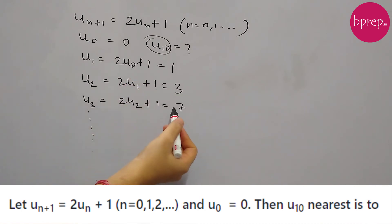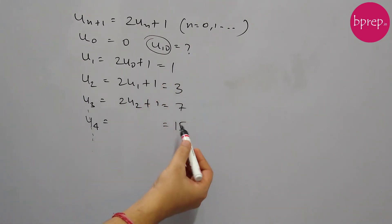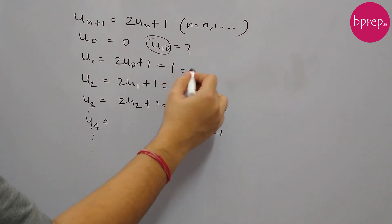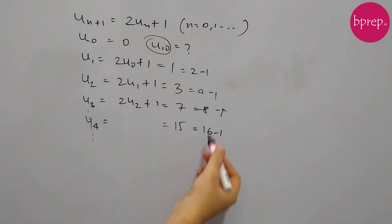To get the pattern, let's try to calculate one more term. So u_4 is 2 into 7, 14 plus 1, so this is 14 plus 1 is 15. Now if you see, this is all coming in series of 2 to the power something. This is 16 minus 1, this is 8 minus 1, this is 4 minus 1, this is 2 minus 1.